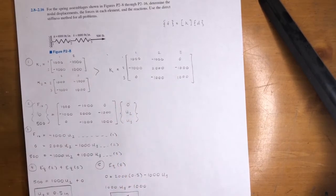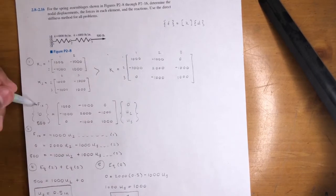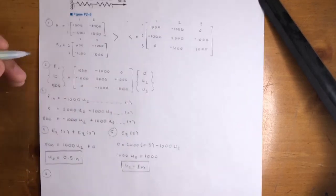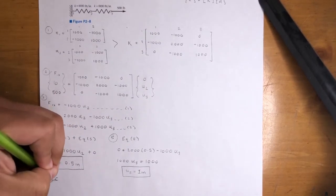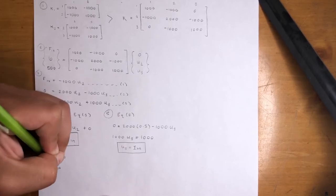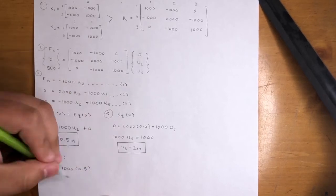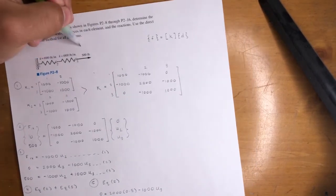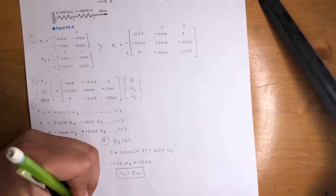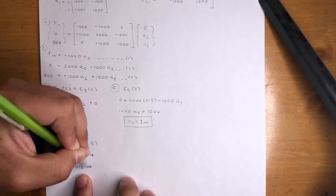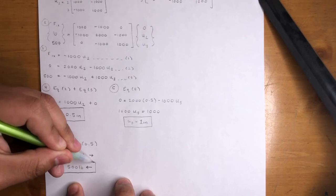Now we have u1, u2, and u3. We need to find f1x. Plugging u2 equals 0.5 into equation 1: f1x equals negative 1,000 times 0.5, so f1x equals negative 500 pounds. That negative sign means it acts in the negative x direction — in other words, 500 pounds acting to the left. The arrows help keep the direction clear.